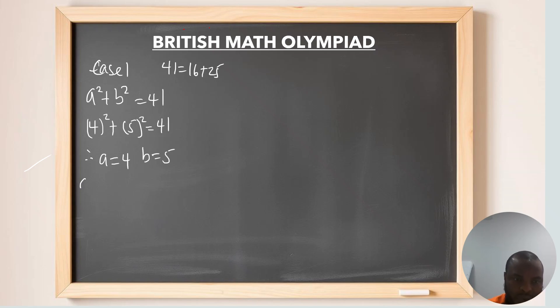Case 2, since we still believe that a squared plus b squared equals to 41. It is possible that we have a to be 5 and we have b to be 4, which is still equivalent to 41. Therefore, in case 2, a is going to be 5 and b is going to be 4.